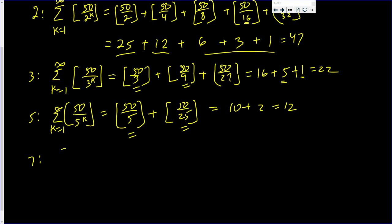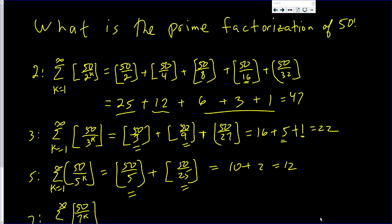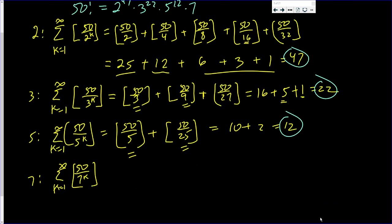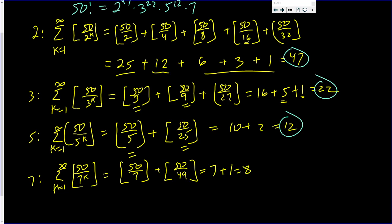Next is 7. We take the greatest integer function of 50 over 7 to the k, as k goes from 1 to infinity. The prime factorization of 50 factorial so far is 2 to the 47 times 3 to the 22 times 5 to the 12 times 7 to some power. This is going to be the greatest integer of 50 over 7 plus the greatest integer of 50 over 49, which is 7 plus 1, which is 8. So we have 7 to the 8th.